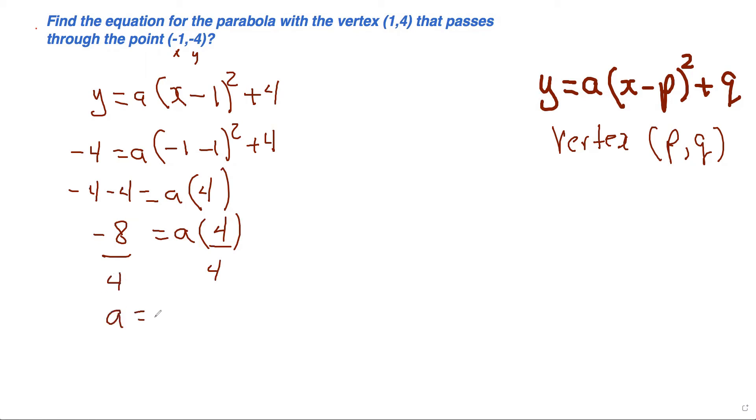So a = -2, and therefore the equation is y = -2(x - 1)² + 4. That's your final answer.